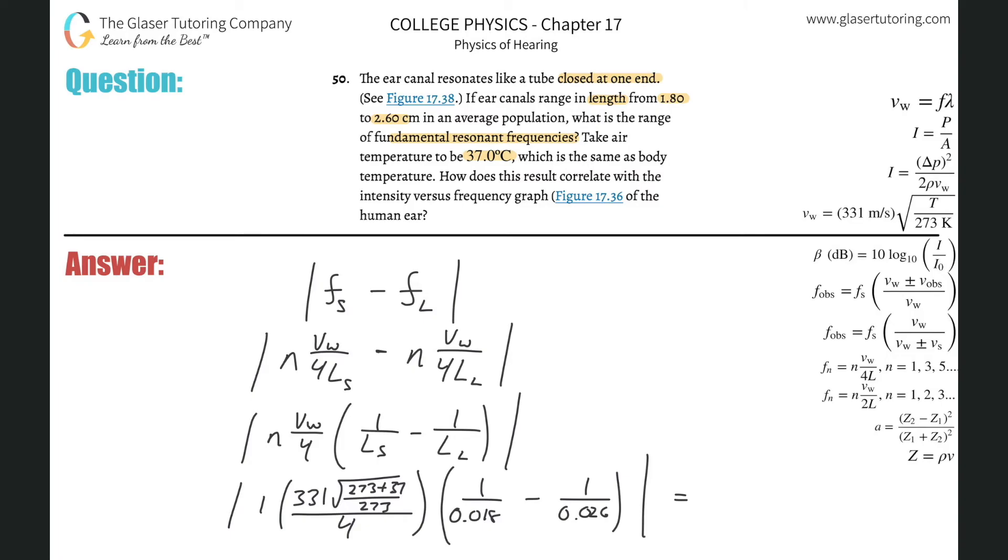So I get a value about 88 there. That 88, this thing works out to be about 88, that I'm now going to multiply by the difference between those two fractions. So take that, multiply it by now 1 divided by 0.018 minus 1 divided by 0.026.